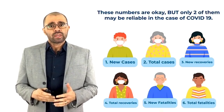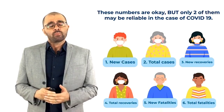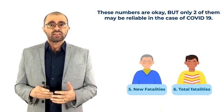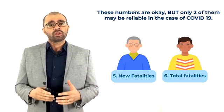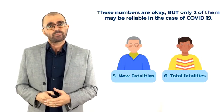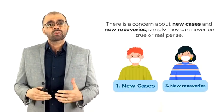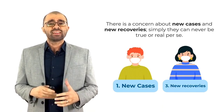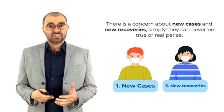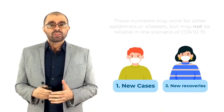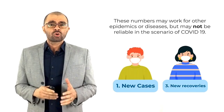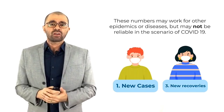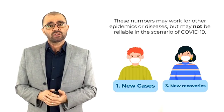These numbers are okay but only two of them may be reliable in the case of COVID-19. Sadly, these are the new fatalities and the total fatalities. There is a concern about new cases and new recoveries — simply they can never be true or real per se. These numbers may work for other epidemics or diseases but may not be reliable in the scenario of COVID-19.